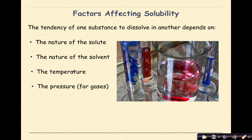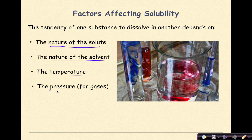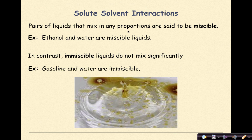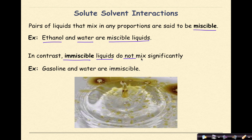Factors affecting solubility include the nature of the solute, the nature of the solvent, temperature, and pressure when dealing with gases. Pairs of liquids that mix in any proportion are said to be miscible — for example, ethanol and water are miscible. Immiscible liquids do not mix significantly; for example, gasoline and water are immiscible.